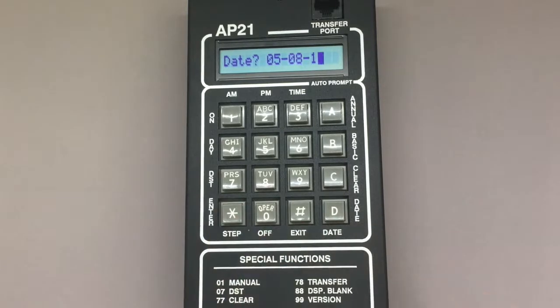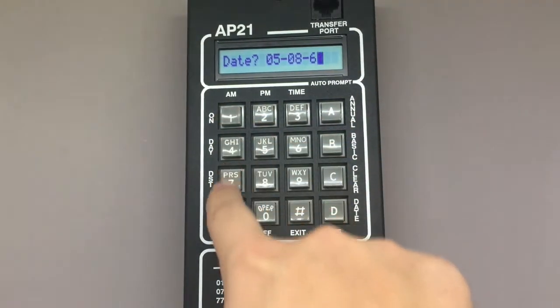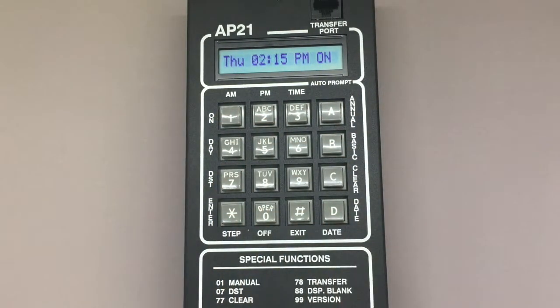Star will advance the cursor to the year input, where again I'll use the keypad to insert the last two digits of the current year, which is 17. Pressing star will store this information and take you back to the home screen.